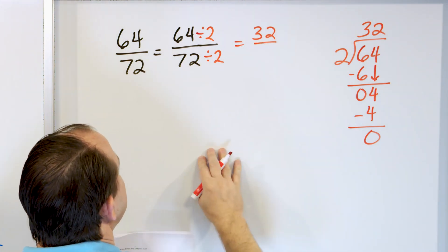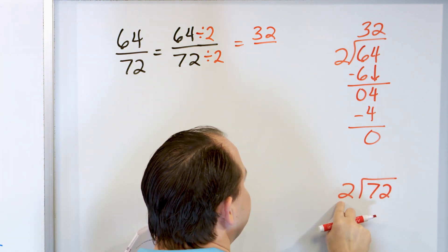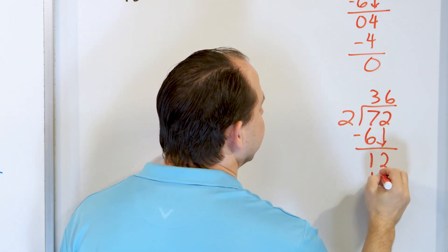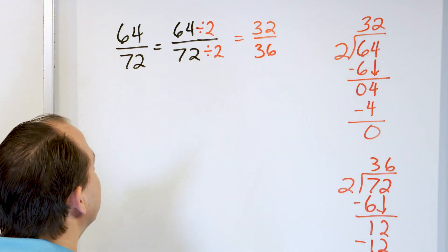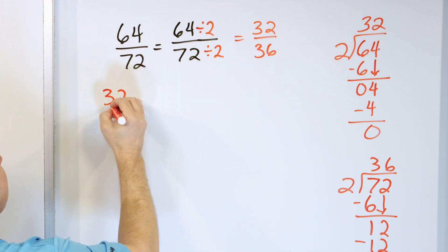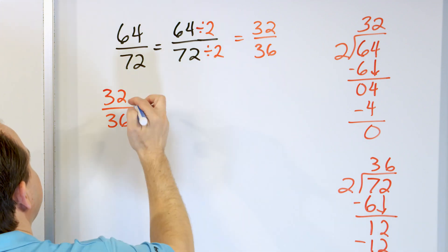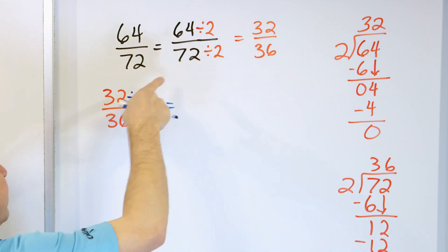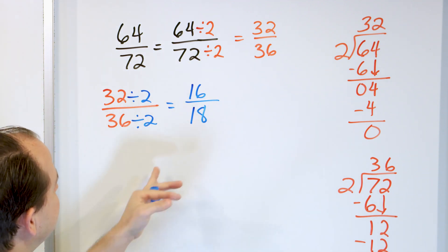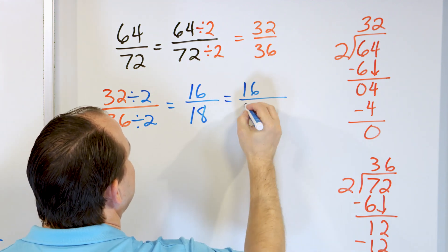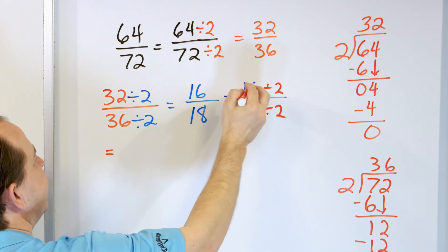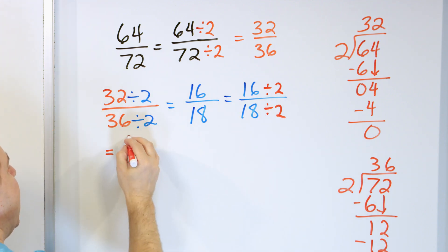So we have 32/36 - still both even. Divide by 2 again: 32 divided by 2 is 16, and 36 divided by 2 is 18. Now 16/18 - still both even! Divide by 2 once more: 16 divided by 2 is 8, and 18 divided by 2 is 9. The answer is 8/9.